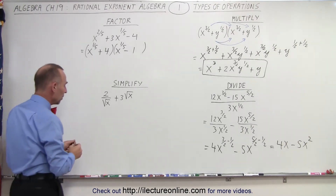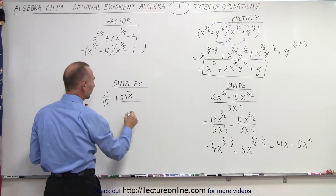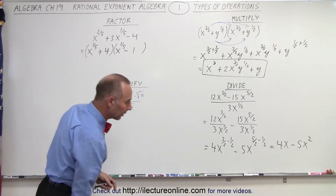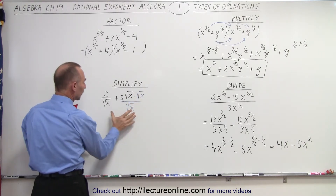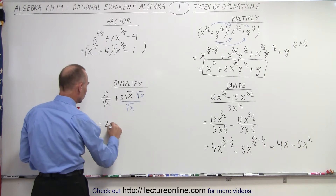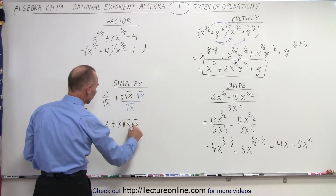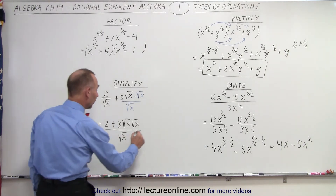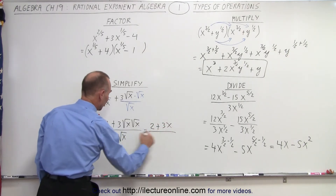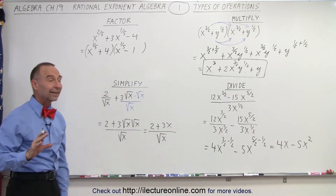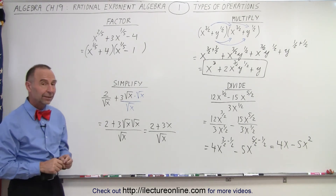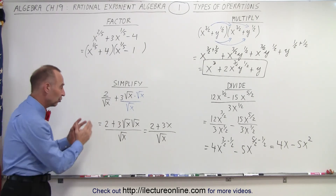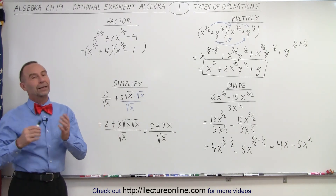Finally, when we want to simplify, we want to write this over a common denominator. So multiply both the top and the bottom by the square root of x. Now we have the same common denominator, so this can be written as 2 plus 3 times the square root of x times the square root of x, over the square root of x. The square root of x times the square root of x is simply x. So this can be written as 2 plus 3x divided by the square root of x. Typically we don't like to leave a radical in the denominator — later on we'll show you how to rationalize the denominator, which means get rid of the radicals in the denominator.